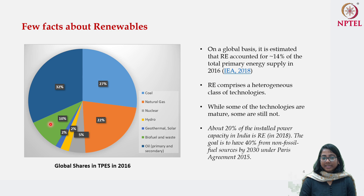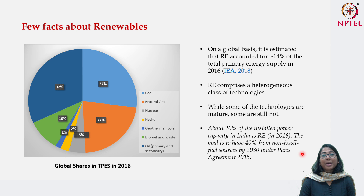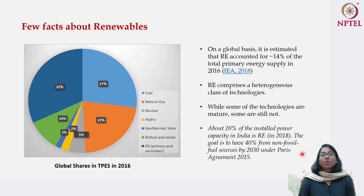The last point is about India: about 20 percent of installed power capacity in India is renewable as of 2018. The goal is to achieve 40 percent electricity generation from non-fossil fuel sources by 2030, and this is the commitment India has made under the Paris Agreement which took place in 2015. If you look at India's energy policy documents, you will see a lot of shifting focus in favour of renewable energy, especially solar energy.